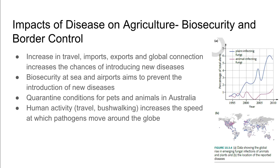Quarantine conditions are in place for pets and animals within Australia, which requires them to be put into quarantine until we can ensure that they are clear and free of any infectious diseases. Human activity such as travel and bushwalking increases the speed at which pathogens move around the globe, which is why some areas have very strict biosecurity measures in place. An example of this is the Galapagos Islands, where they ensure there is no dirt, seeds, or anything in your shoes as you move between islands, so that endemic species are not transferred between the islands.